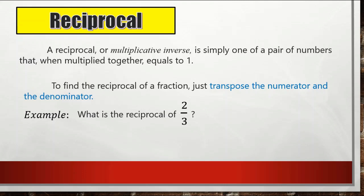For example, the reciprocal of two-thirds: we change the position of the numbers, so the numerator two becomes the denominator and the denominator three becomes the numerator. The reciprocal of two-thirds is three-halves. To verify: two-thirds times three-halves equals six-sixths, which is simply one — meaning three-halves is the reciprocal of two-thirds.